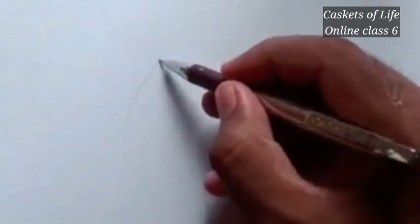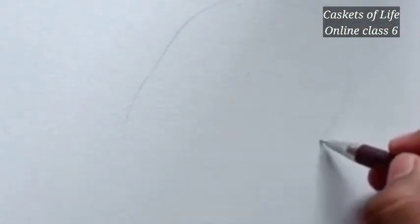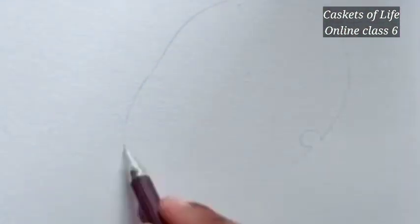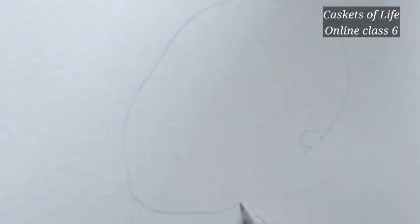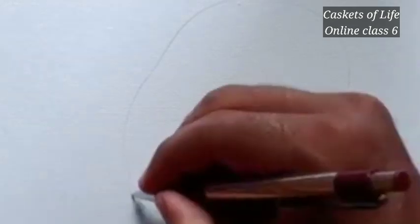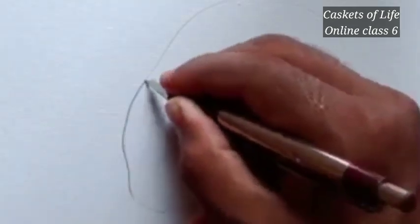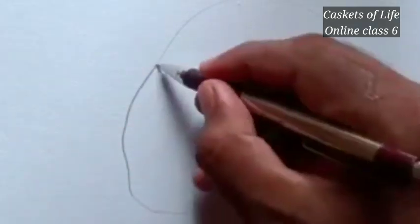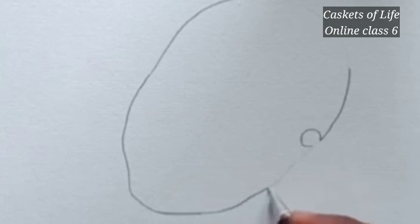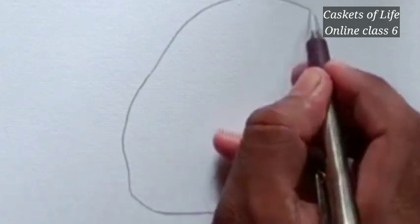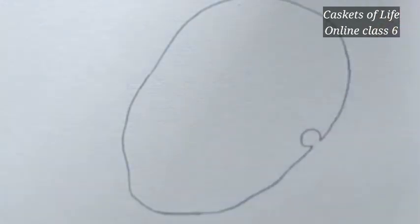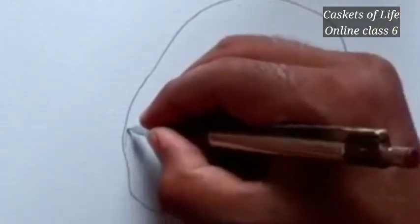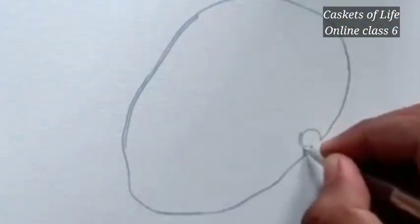Now let's study how to draw an animal cell. So please write down the heading 'Animal Cell' in your notebook and draw the animal cell like this. Now you have to draw a clear cell membrane.